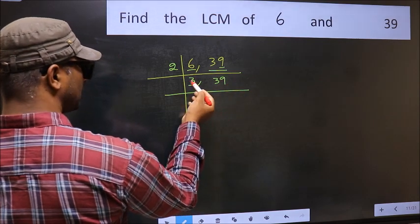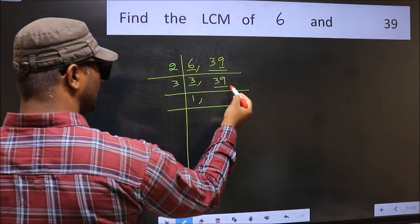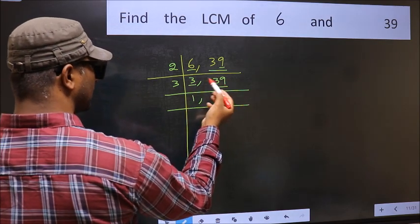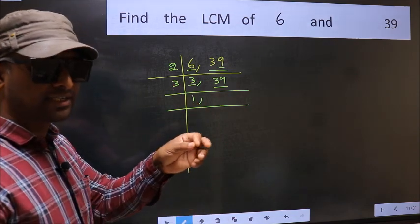Now here we have 3. 3 is a prime number, so 3 divided by 1 is 3. The other number 39. To check whether 39 is divisible by 3 or not, for that, add the digits.